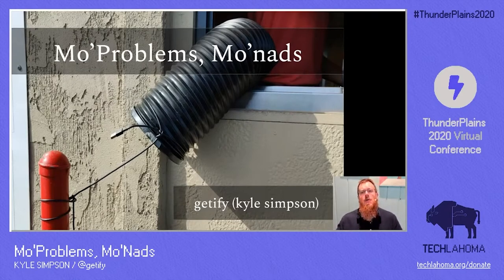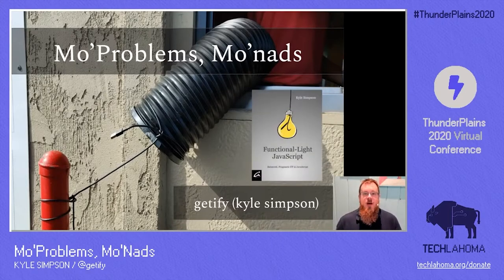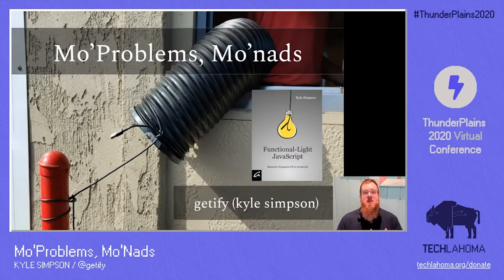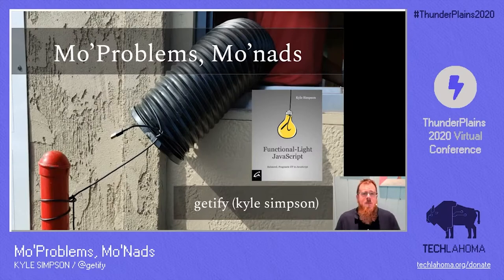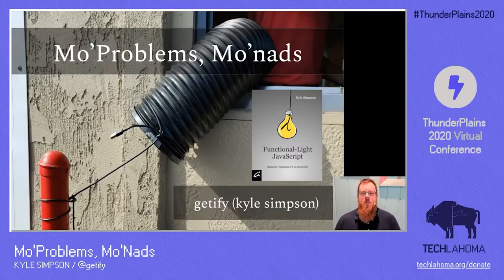Today we're going to talk about monads, and I know that's some really scary stuff in the overall realm of functional programming. In addition to some other books you may know that I've written, you probably haven't heard about the Functional Light JavaScript book. It's all about functional programming, but it has an appendix about monads. We only have a few minutes together, so don't expect this to be a PhD dissertation. We're just going to try to develop some ground-up intuition about how these things help us solve problems in our code.